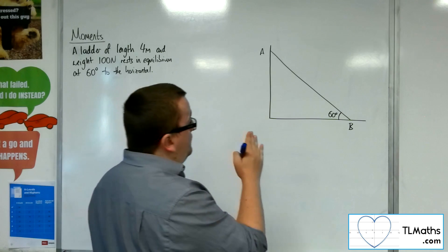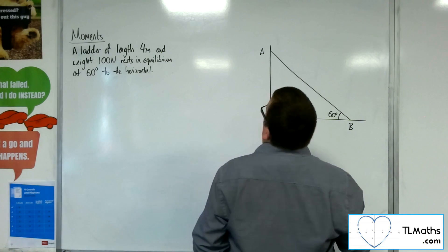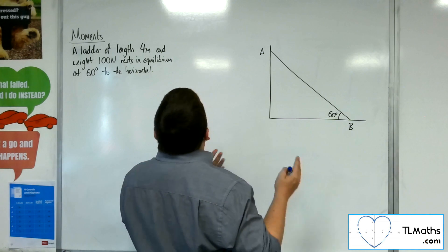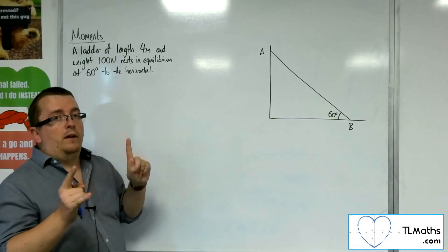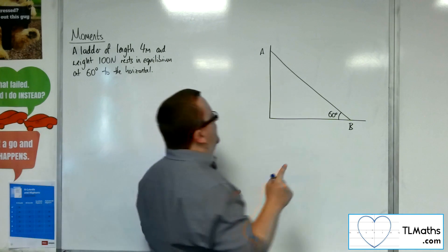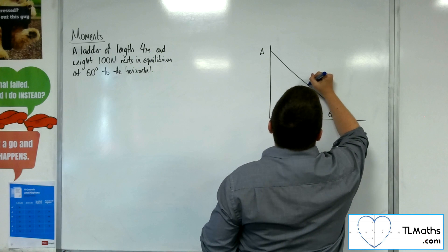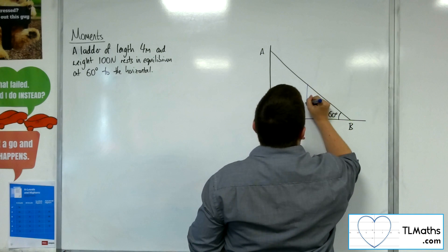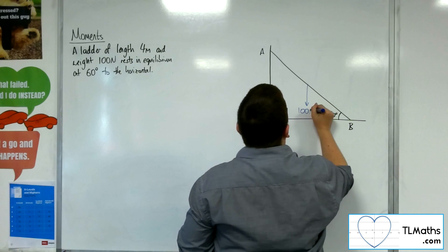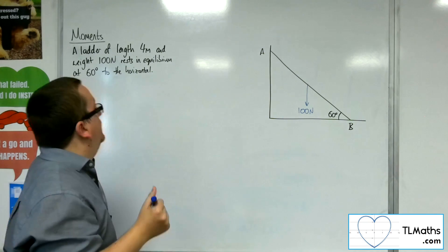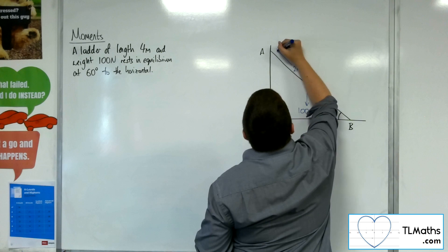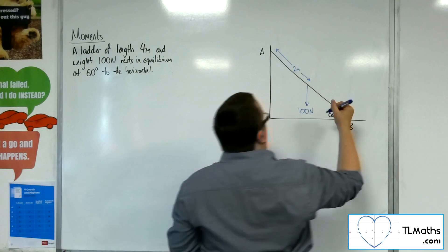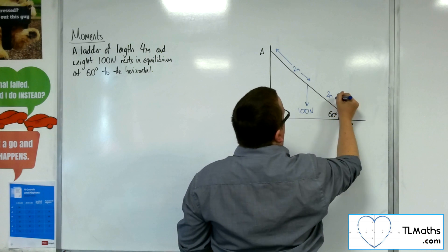So here's your ladder. Its weight will act through its center of mass and we're going to model it as a uniform rod, so it's going to act through its center. So there's your 100 newtons. This is of length 2 meters and that will be of length 2 meters as well.